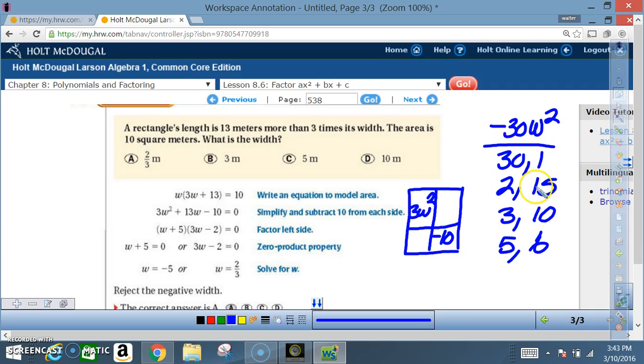to be 2 and 15, the 15 being positive and the 2 being negative. 15 minus 2 would give me a positive 13, and 15 times negative 2 would give me a negative 30. All right, so now we're...